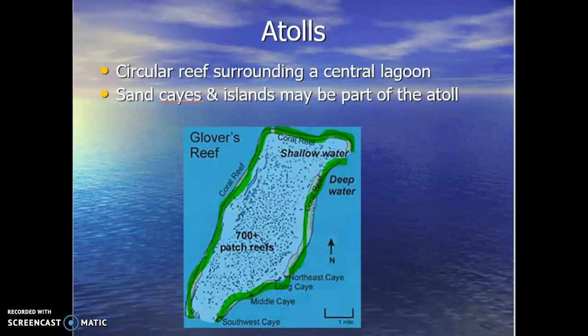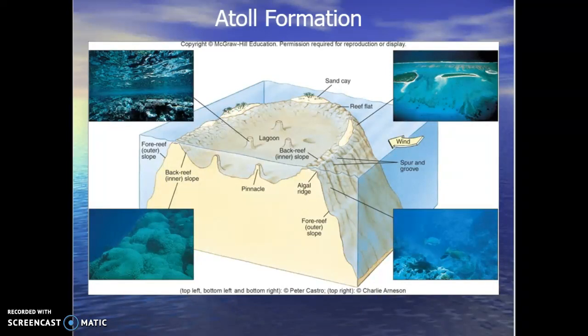The atoll formation was first proposed by Charles Darwin. He hypothesized that volcanic action plays a big role in the formation of atolls — because how else do you get a reef structure out in the middle of the ocean, far from land and shallow water, forming miles out in the open ocean? In the next lecture, we're going to talk about atoll formation, how these structures develop, and why atolls are such an important ecological feature.